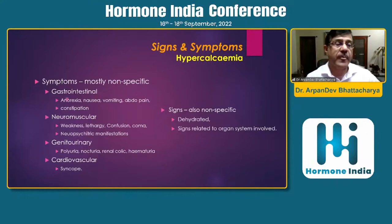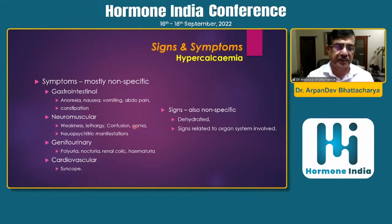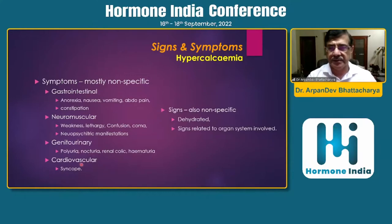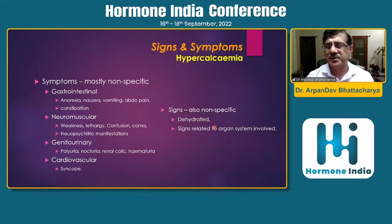Symptoms and signs are quite nonspecific: gastrointestinal symptoms — anorexia, nausea, vomiting, constipation; neuromuscular weakness, lethargy, confusion, and coma depending on degree of calcium elevation. Genitourinary: polyuria, nocturia. Cardiovascular: syncope, rhythm disturbance. Signs are also very nonspecific. Dehydration is almost a consistent feature with hypercalcemia, and there will be signs related to each involved organ system.